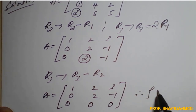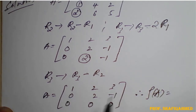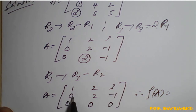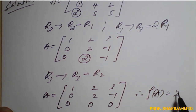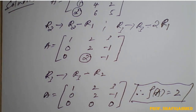Therefore, the rank of matrix A: how many rows have non-zero elements? The first row has elements, the second row has elements, but the third row is all zeros. So leaving the zero row, row 1 and row 2 have elements — that is 2 rows. Therefore, the rank of the matrix is 2. In this way, we simplify the problem to find the rank of the matrix.